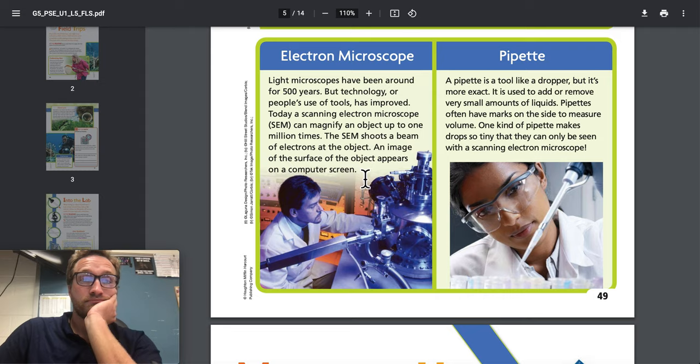Electron microscope: Light microscopes have been around for 500 years, but technology or people's use of tools has improved. Today a scanning electron microscope SEM can magnify an object up to 1 million times. The SEM shoots a beam of electrons at the object. An image of the surface of the object appears on a computer screen. Pipette: A pipette is a tool like a dropper but it's more exact. It is used to add or remove very small amounts of liquids. Pipettes often have marks on the side to measure volume.